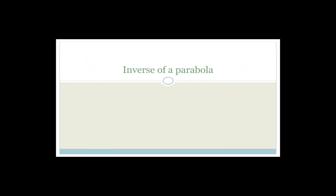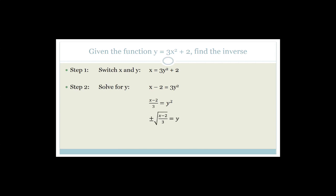So again, in order to get the inverse of a function, we swap the x and y and we solve for y. Originally we were given y equals 3x squared plus 2x. We swap the x and y to get x equals 3y squared plus 2, then solve for y. The first thing you do is take everything that's not a y onto the other side, divide by 3, and then use square root. You get plus or minus the square root of x minus 2 over 3. Let's go through an example.